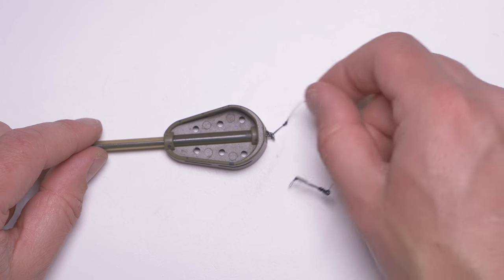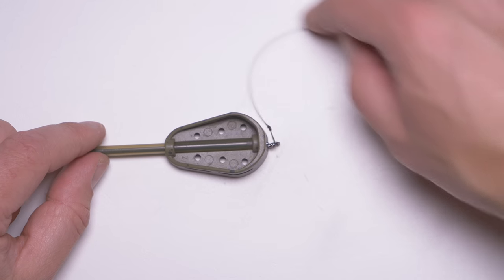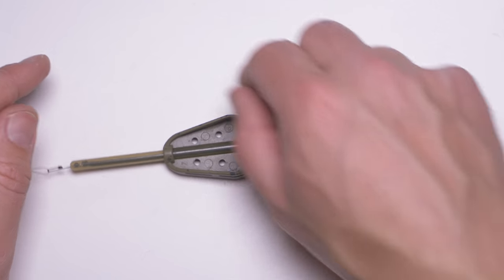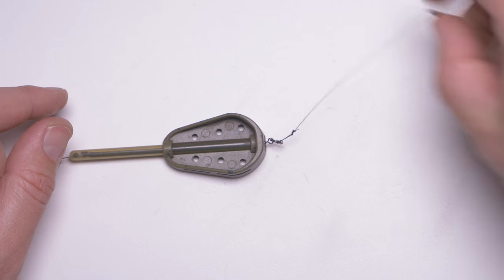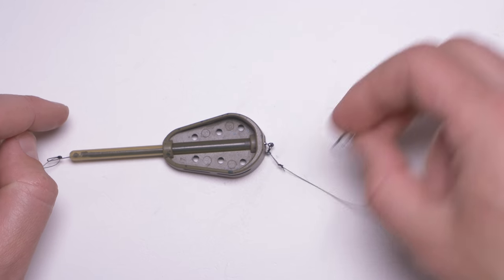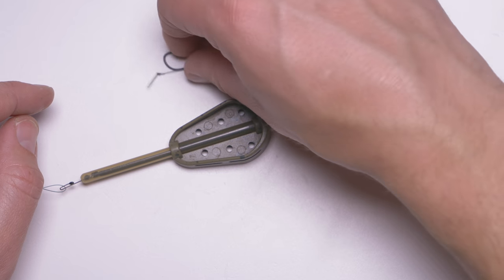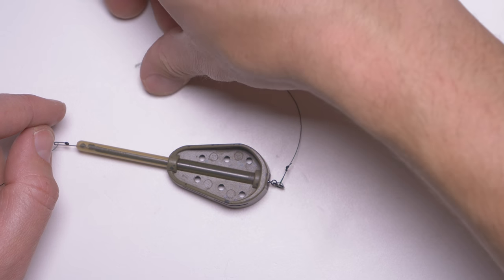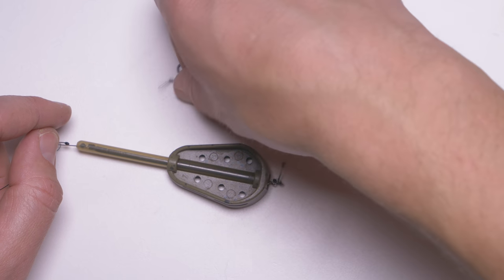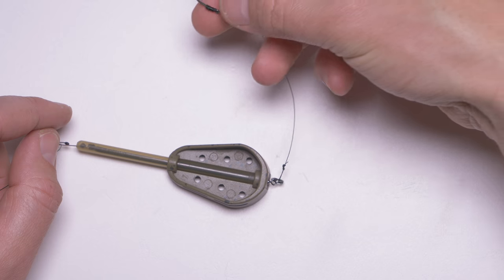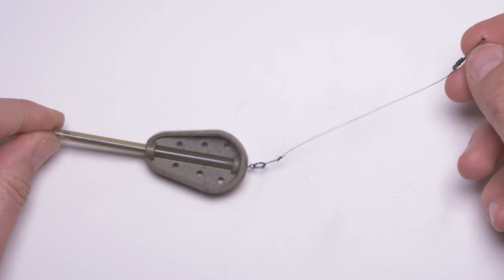We have our hook link attached to the feeder by a very big ring, and now we have lots of movement. The hook link can spin in any direction, pretty much 360 degrees. Again, it means that no matter from which direction the fish comes to pick your hook bait, the hook will be able to turn and hook the fish. That's really perfect.